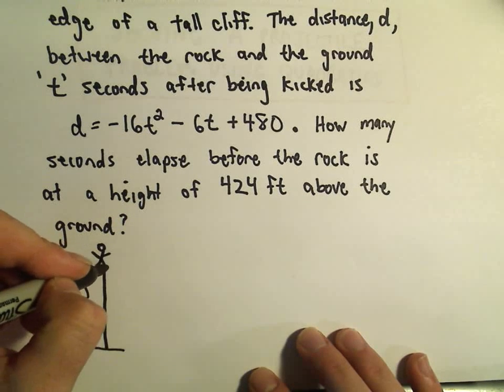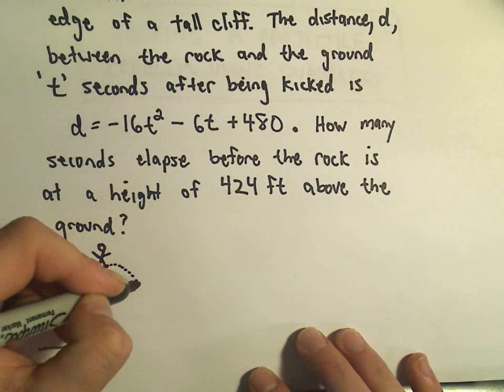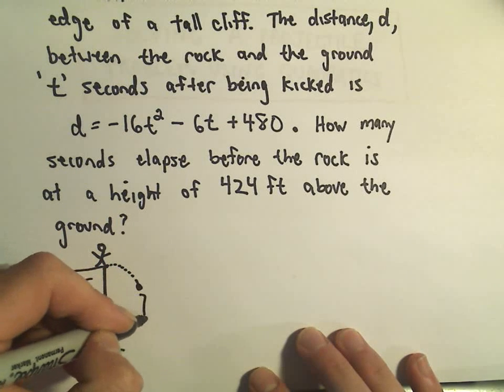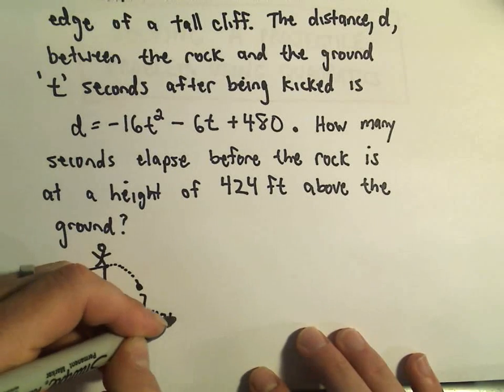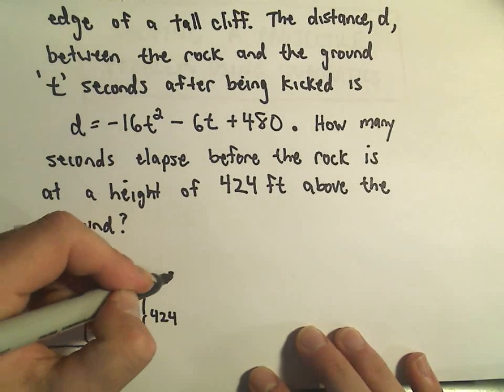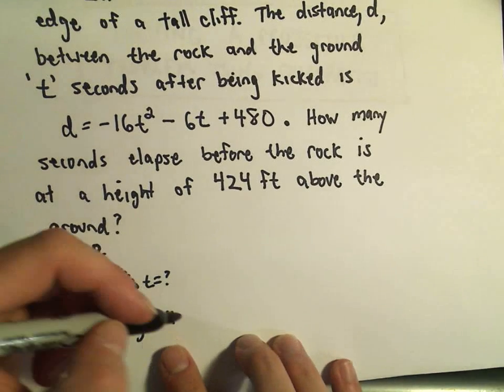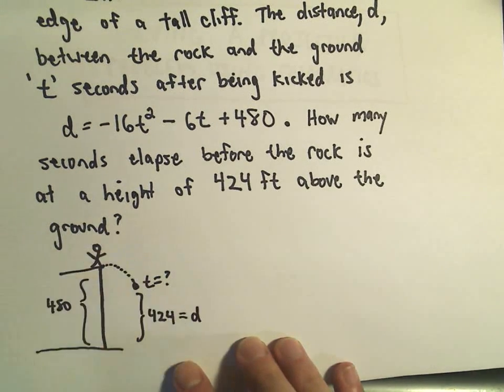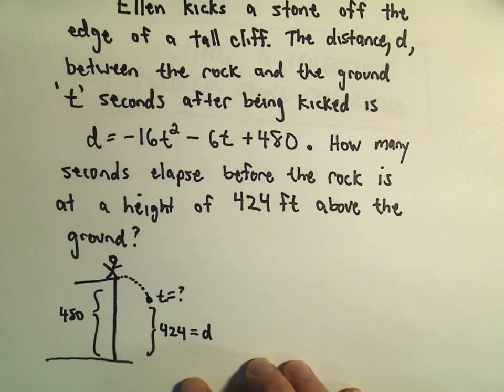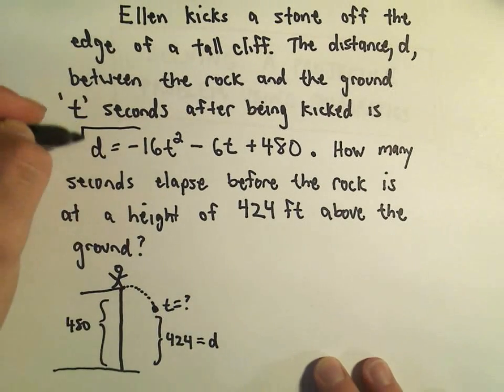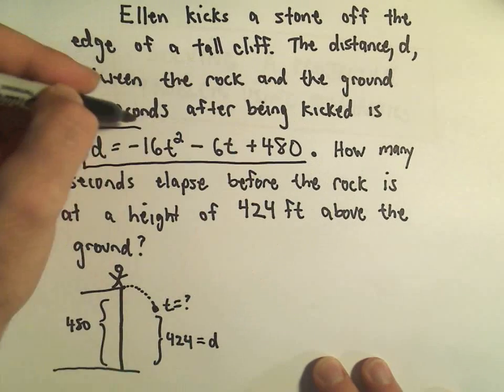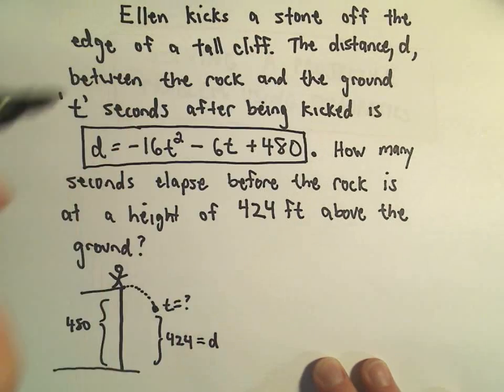So we want this stone to fall off the cliff and we want to know how long does it take before it's 424 feet still above the ground. To do this all we really have to do is we want the distance to be 424. So all I'm going to do is in my equation here, I'm just going to replace the d with 424.